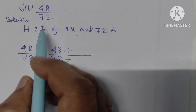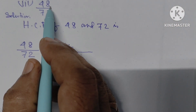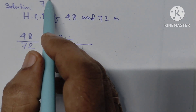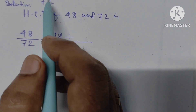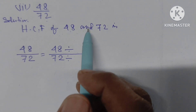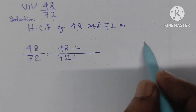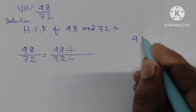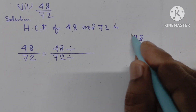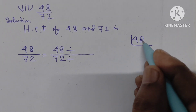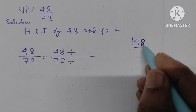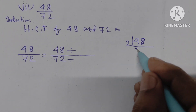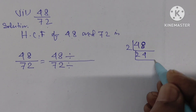Number 3: 48 by 72. At first we have to find out the SCF of 48 and 72. The unit place of 48 is 8, so it is divisible by 2. Dividing: 2 into 4 gives 8, then 2 into 2 gives 4.